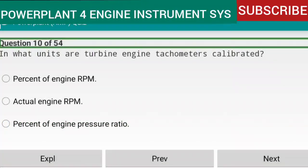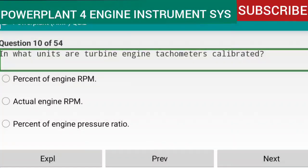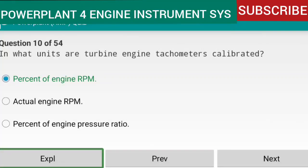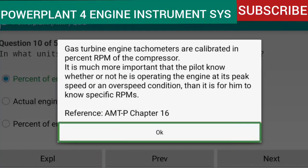Question 10 of 54: In what units are turbine engine tachometers calibrated? Answer: percent of engine RPM. Gas turbine engine tachometers are calibrated in percent RPM of the compressor. It is much more important that the pilot know whether the engine is at peak speed or in an overspeed condition than to know the specific RPM. Reference: AMTP Chapter 16.